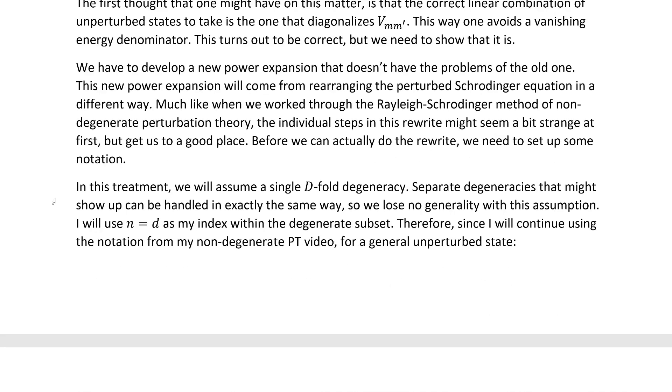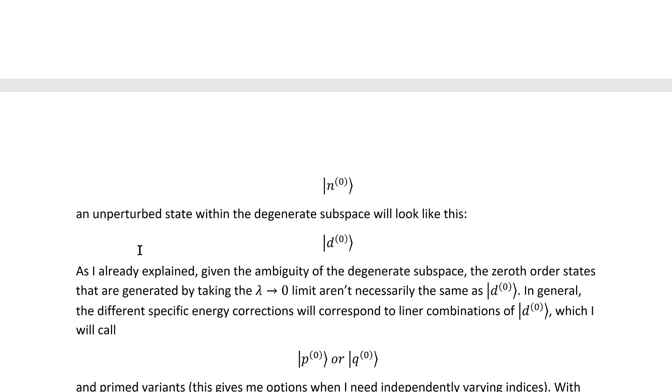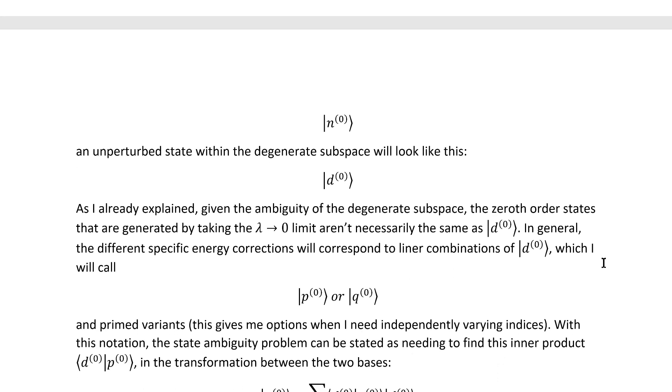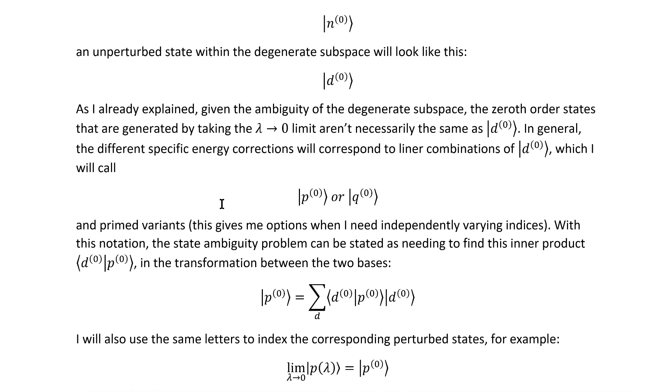In this treatment, we'll assume a single d-fold degeneracy. Separate degeneracies that might show up can be handled in exactly the same way, so this assumption loses us no generality. I will be using a lowercase d as my index within the degenerate subspace. Therefore, since I will continue using the notation from my non-degenerate perturbation theory video for a general unperturbed state, an unperturbed state specifically within the degenerate subspace will look like this. As I already explained, given the ambiguity of the degenerate subspace, the zeroth order states that are generated by taking a lambda equals zero limit aren't necessarily this set. In general, the specific energy corrections will correspond to linear combinations of them, which I will denote with a lowercase p or a lowercase q or primed variance as I come across the need for indices that refer to those same sets but vary independently.